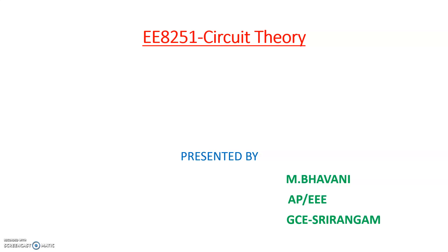What is a circuit? An electric circuit is a network that has a closed loop giving a return path for current. What is a network? An electrical network is an interconnection of electrical elements such as resistor, inductor, capacitor, voltage source, current source, and switch.